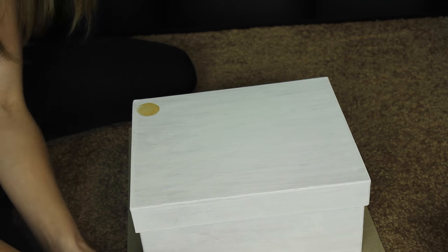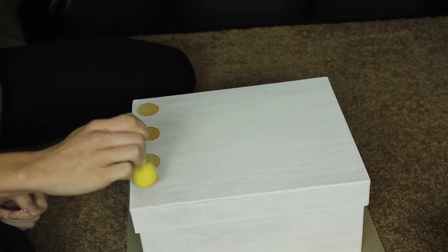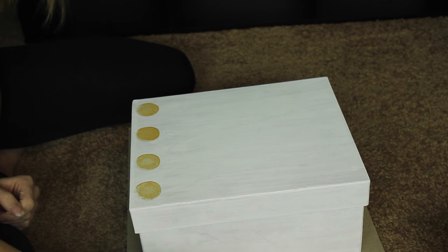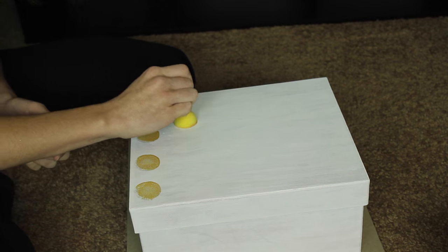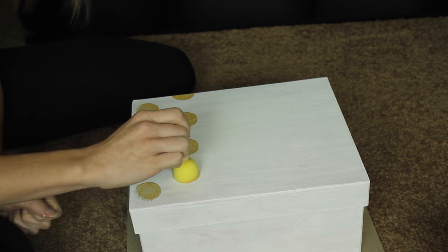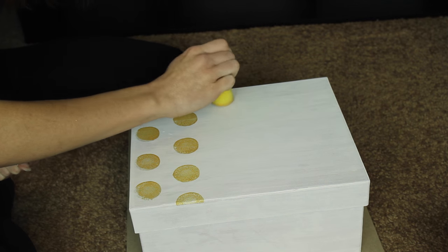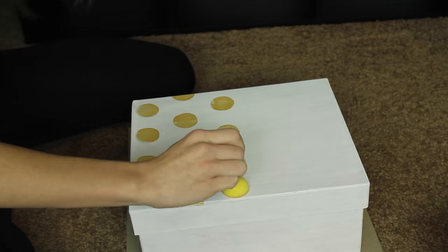And now I'm taking some gold paint and a circle shaped sponge brush and putting polka dots on this box. And you'll also see in a few seconds later that I also made a box with gold stripes on it on the top of the lid.